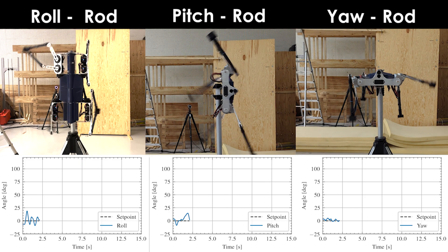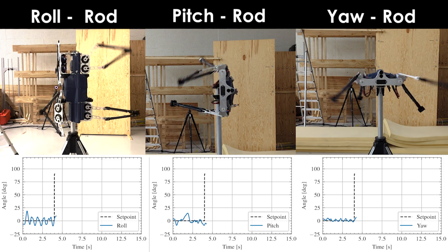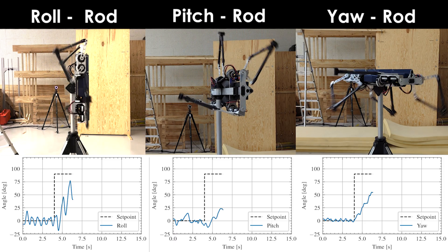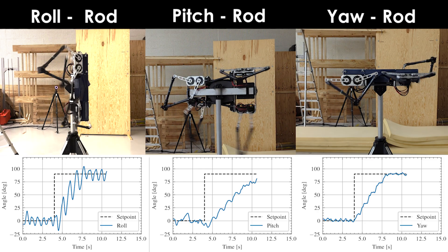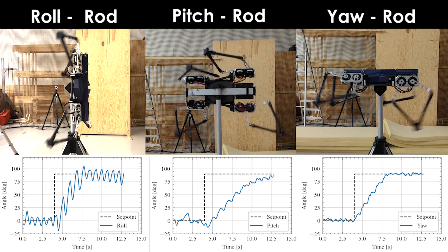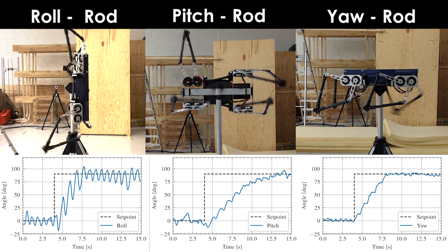The rod-mounted configuration allowed free rotation about a single axis enabling isolated testing of roll, pitch, and yaw. While this test setup ensured safe testing, it introduced workspace limitations and system disturbances through resistance and vibrations. The video demonstrates roll, pitch, and yaw response to a 90-degree step command in robot attitude.